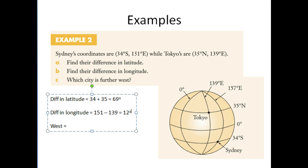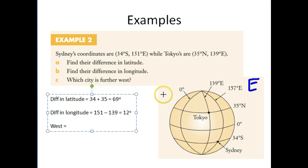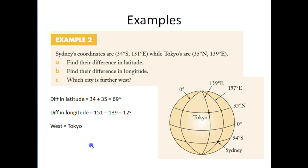Make sure you write the degree sign in there — it's a really important part of the answer. Last part: which city is further west? Now, they are both in the eastern hemisphere, but we can make a decision as to which one is further west. Remember, this side over here will be east, and then going around we'll go to the west. We can see just in our picture that Tokyo is further west. And that's that question done.